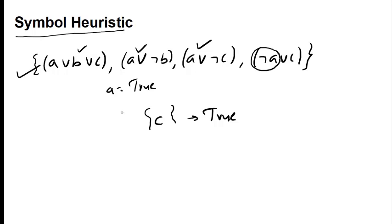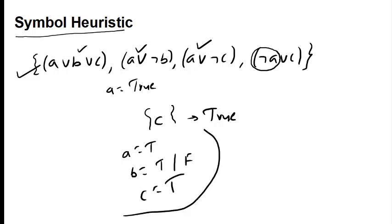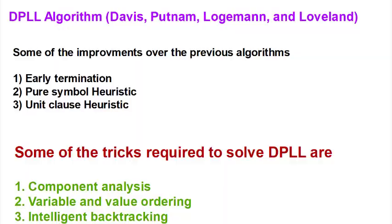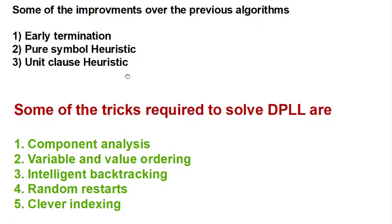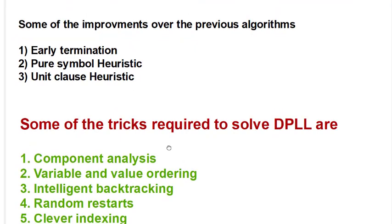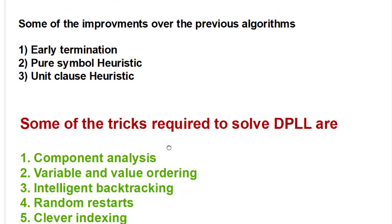In summary, DPLL uses unit propagation, pure literal elimination, and symbol heuristics. Key improvements include early termination, pure symbol heuristics, and unit clause heuristics. Additional tricks used in modern DPLL solvers are component analysis, variable and value ordering, intelligent backtracking, random restarts, and clever indexing. That's all for this lecture — thanks for watching.